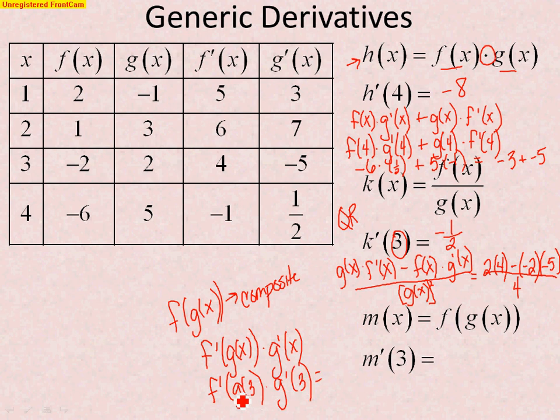So, we work inside, out. g of 3, you go into the g columns, g of 3 is 2. So, this is actually saying f prime of 2 times g prime of 3.